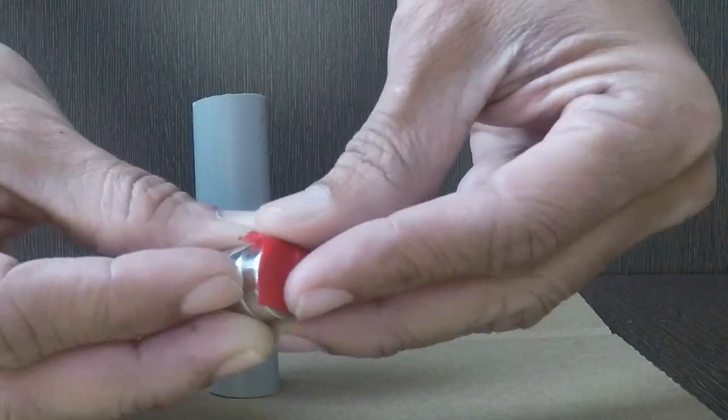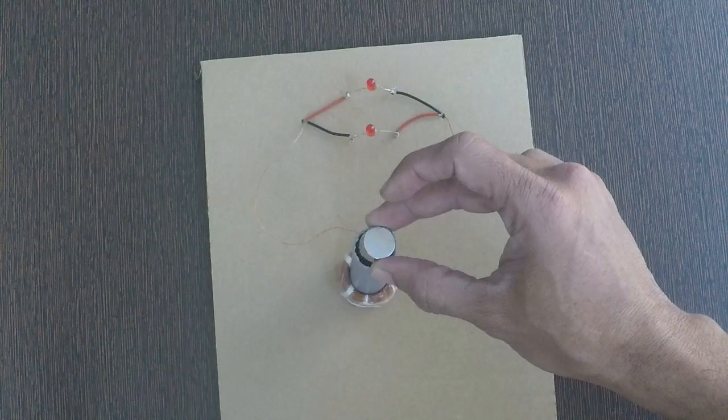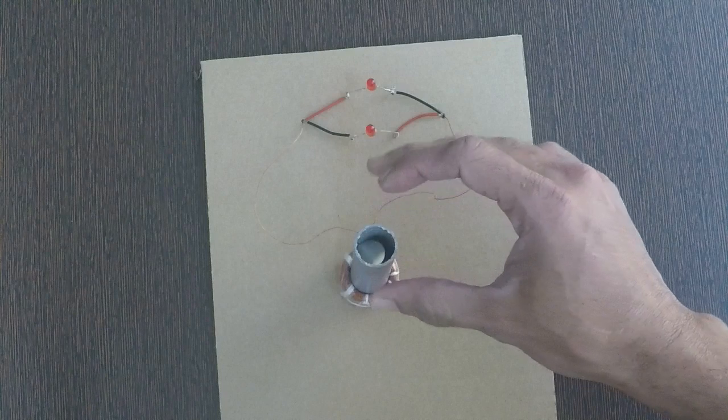The PVC pipe acts as a guide for magnets. More number of turns and a strong magnet results in more induced current.